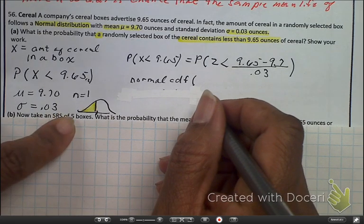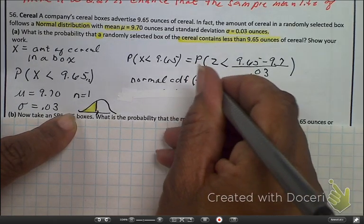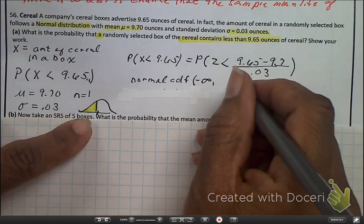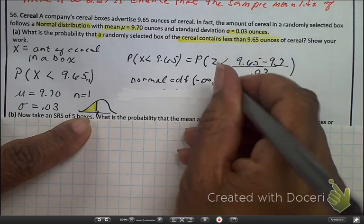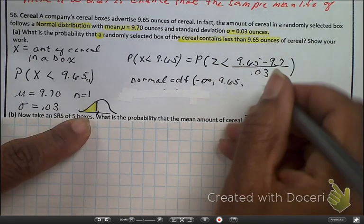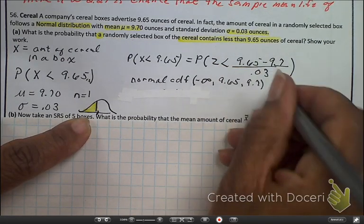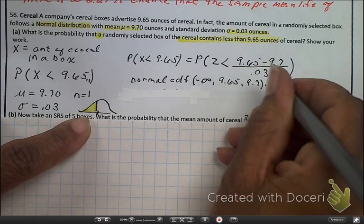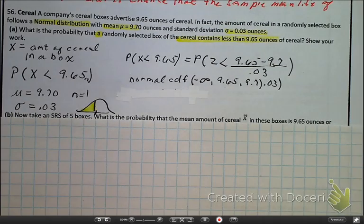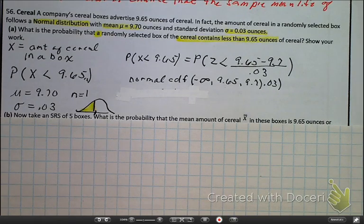So, go ahead and do your normal CDF and then find for me the probability. Remember, your left bound is a negative infinity, some really small number. Your right bound is at 9.65. Your mean is 9.7. And your standard deviation is 0.03. And find your probability.